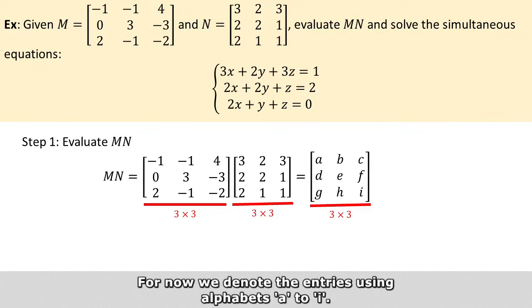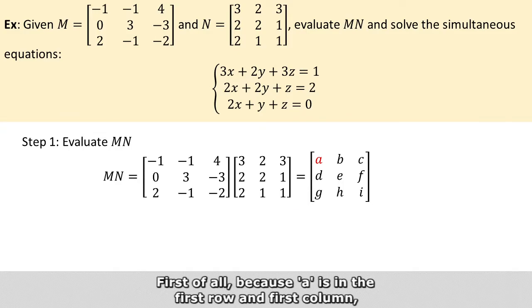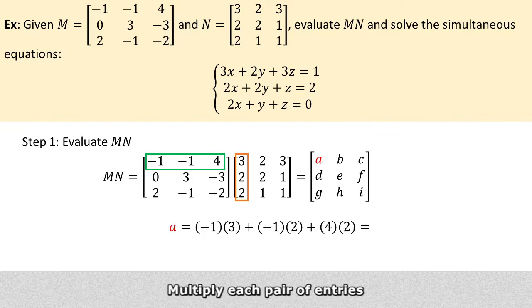For now, we denote the entries using alphabet A to I. Let's look at how each of the entries can be computed. Because A is in the first row and the first column, we take the first row of M and the first column of N, multiply each pair of entries, and then sum them up.